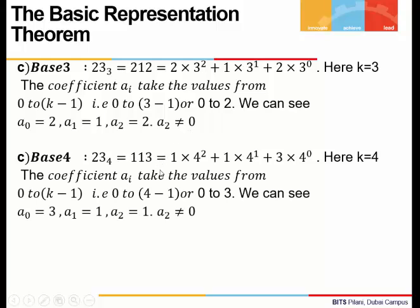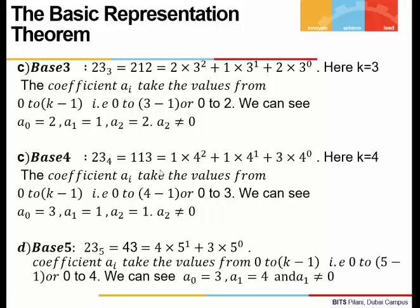When we represent 23 to base 4, dividing 23 by 4 repeatedly gives 1, 1, 3. We can write 23 as a sum of powers of 4 in base 4 representation, and the coefficients can take values from 0 to 3. That condition is satisfied, and the largest power of 4 has coefficient 1, which is non-zero.